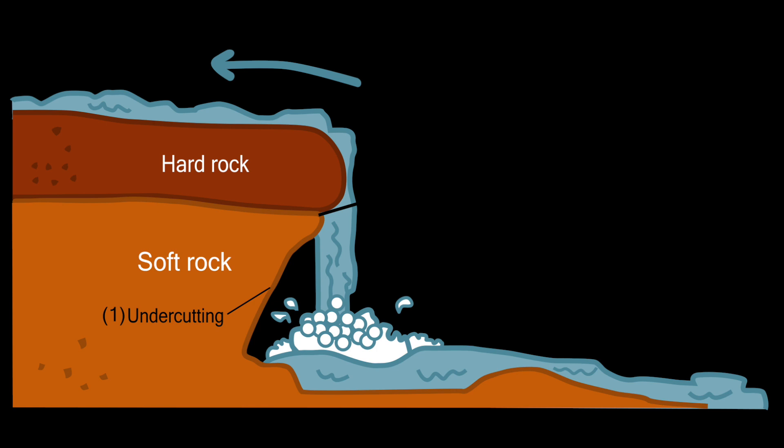So then what happens is the plunge pools develop at the bottom. Now because this keeps on happening and the water is getting away the soft rock because it's easy to break down and the hard rock is falling down, the waterfall then retreats upstream so it keeps on going backwards.